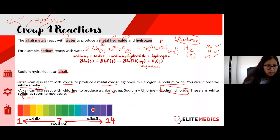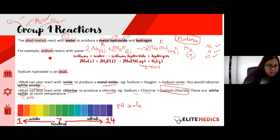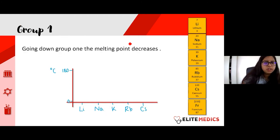This rainbow is the pH scale, which tells you how acidic or alkaline something is. We'll come back to it when we do acids and bases, but just know that if it's an alkali metal reaction product, it will be on the alkaline side of the scale.